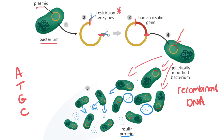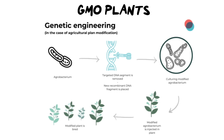This insulin is a liquid when in large amounts, so we collect it, bottle it, and create insulin for diabetics. Now, one other thing I want to go over is other ways that we genetically modify organisms besides bacteria — in particular, plants.